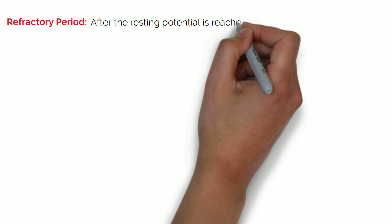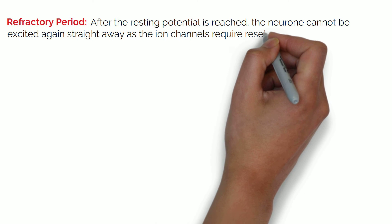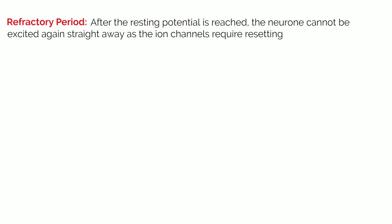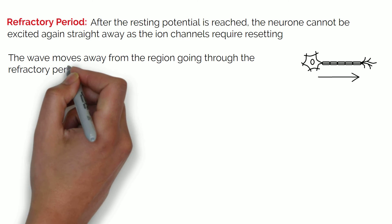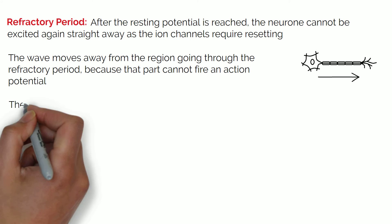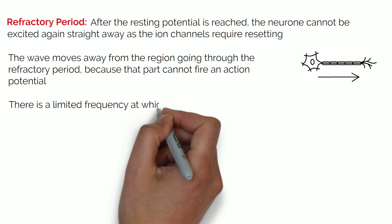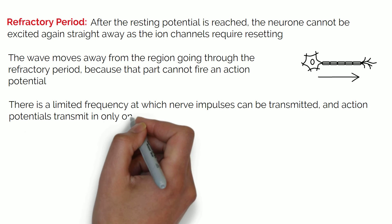After the resting potential is reached, the neuron cannot be excited again straight away, as ion channels require resetting. This period of inactivity is the refractory period. The action potential moves along the neuron as a wave of depolarisation. The wave moves away from the region going through the refractory period, because that part cannot fire an action potential. Therefore, there is a limited frequency at which nerve impulses can be transmitted, and action potentials can travel in only one direction.